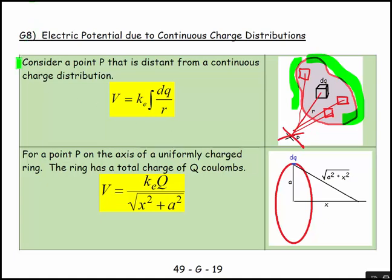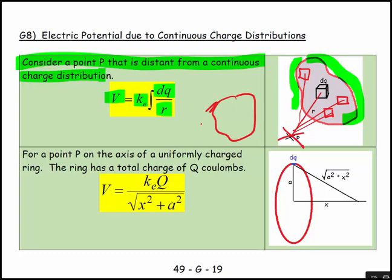What we say is that consider a point P that is a distance from a continuous charge distribution. Then the potential is equal to Ke. Rather than Q, we'll have DQ. It's a little bit of charge over the separation of R. So then we could do a generic cloud of charge and we could be working away at it. And it would be a long process and would tax us.